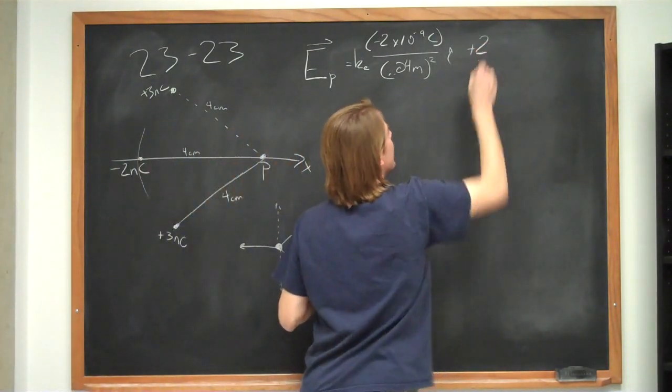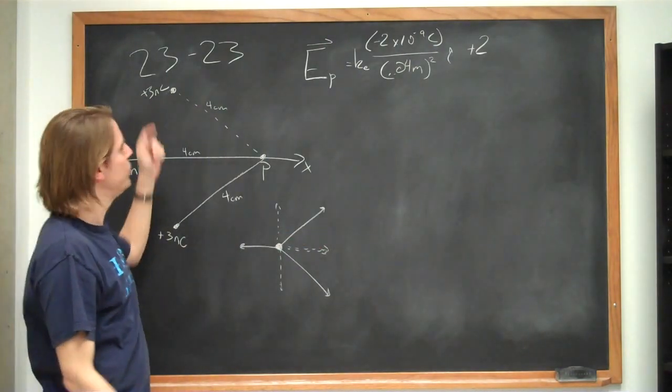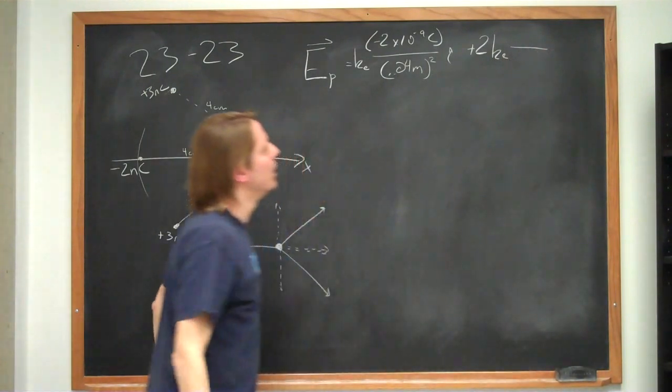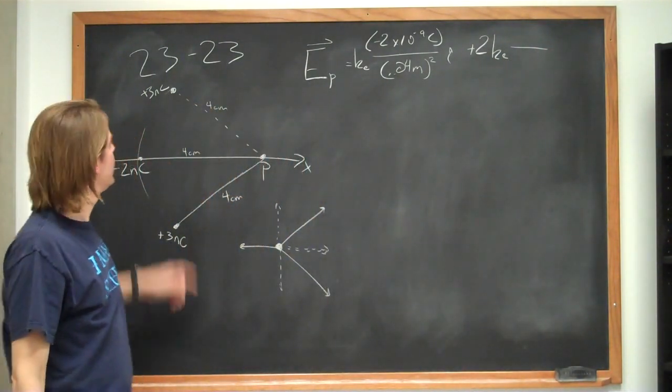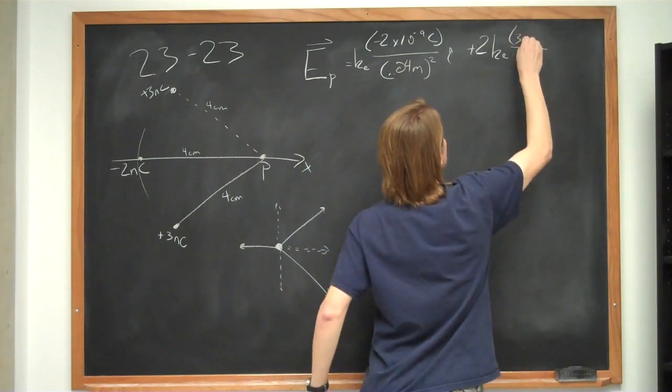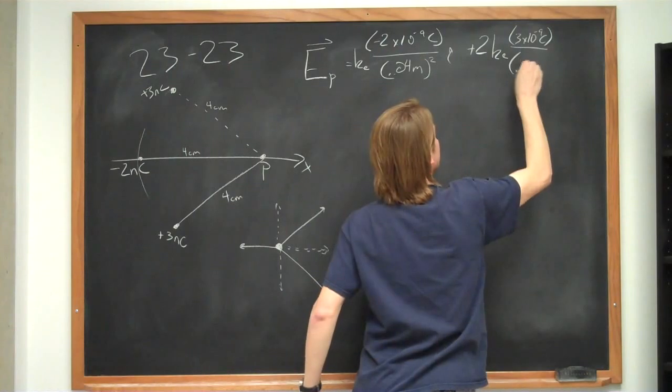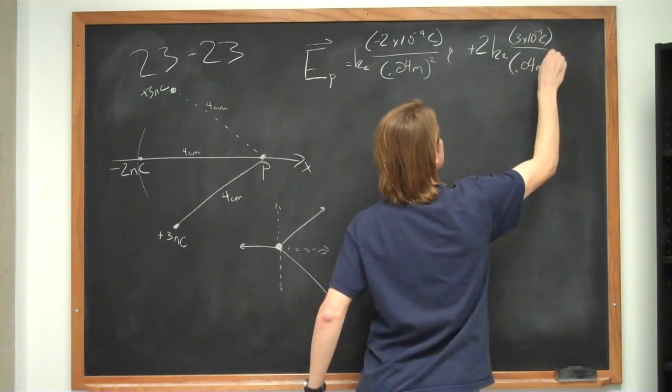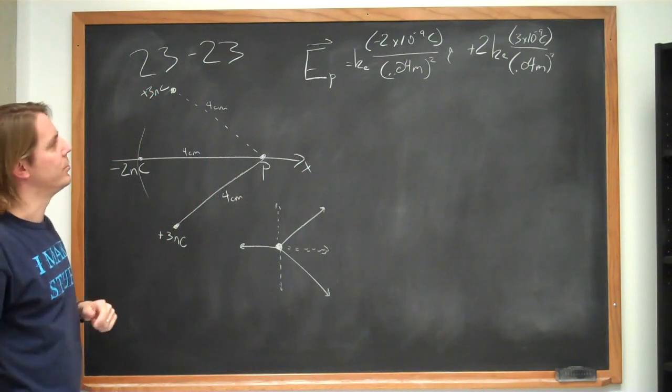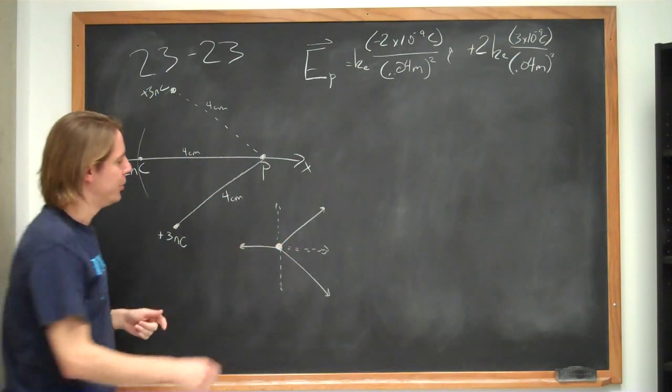The other two charges, we'll do them both together, because we know they'll have the same horizontal component. So plus 2 ke times the charge of each one is 3 times 10 to the minus 9. The distance is 0.04 meters squared. Since these are all on a circle, they're all at 4 centimeters. And finally, we need to get this component. We need the horizontal component.